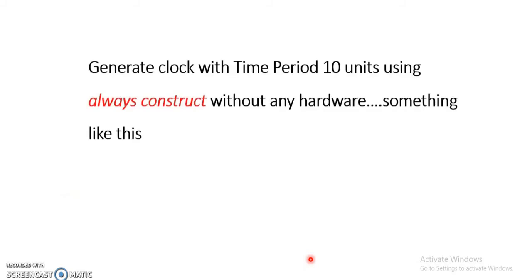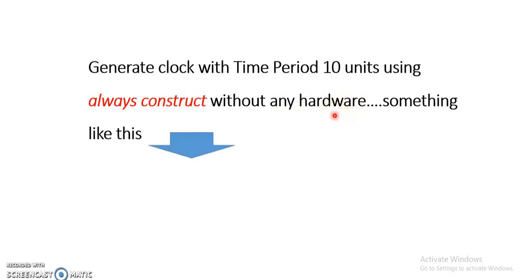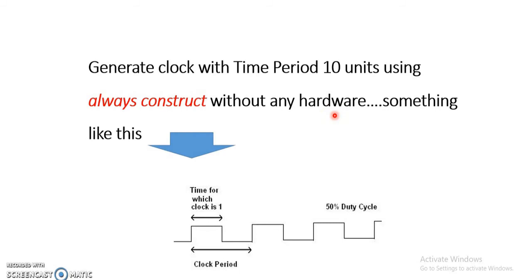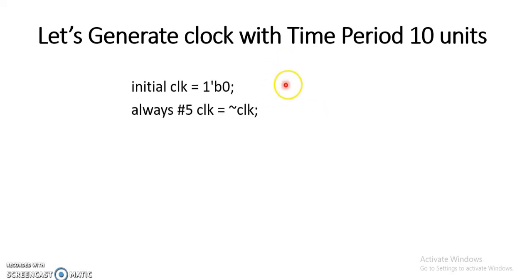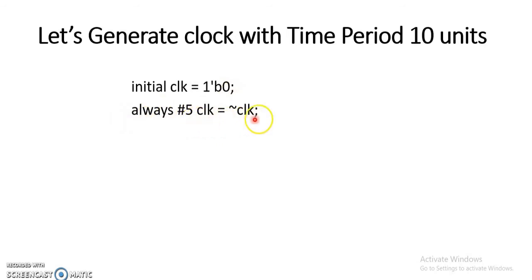Let us see how the always construct can be used to generate a clock with a time period of 10 units. We have both an initial construct and an always block. In the initial block, we set clock to zero initially. Within the always block, we have just one statement that toggles the clock after a delay.